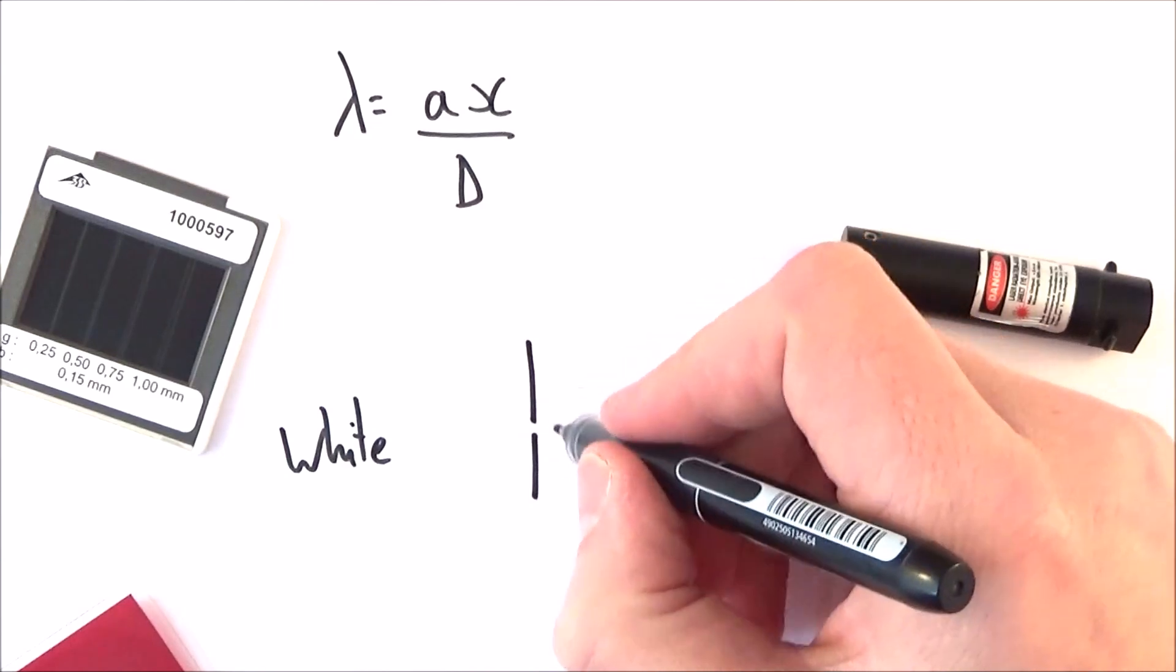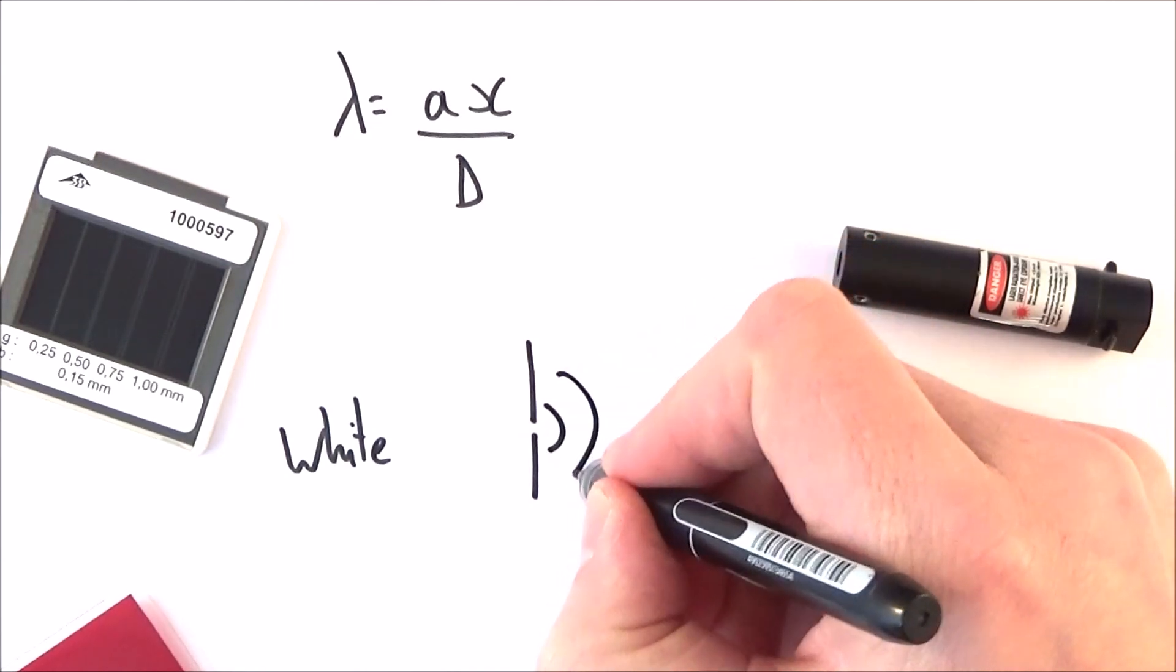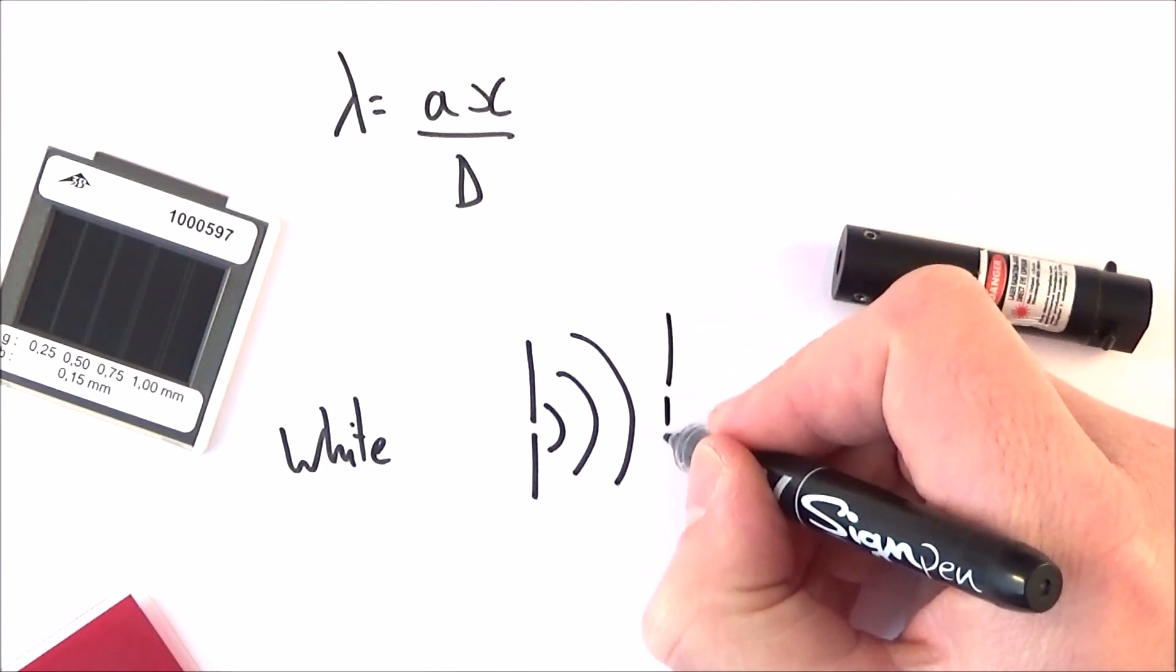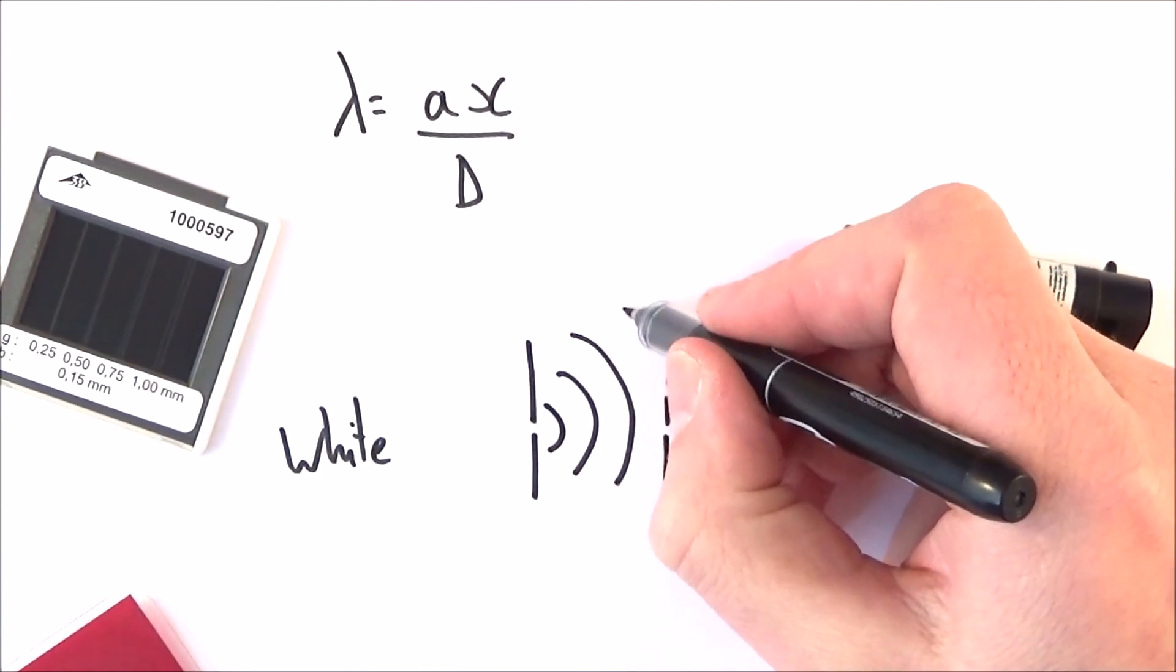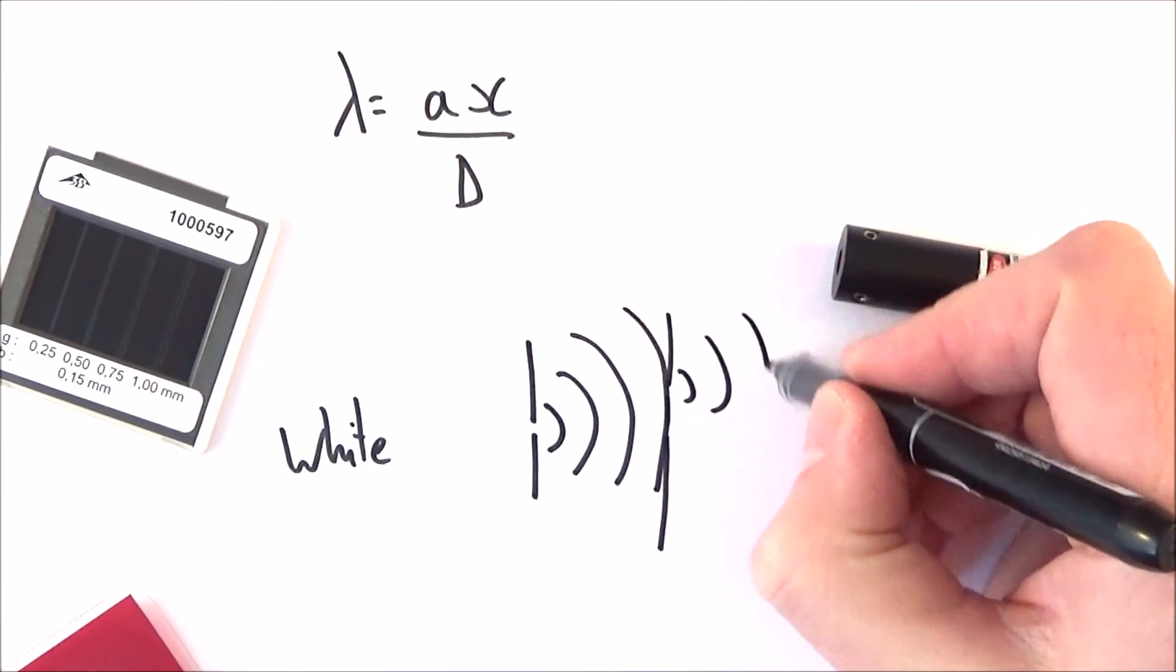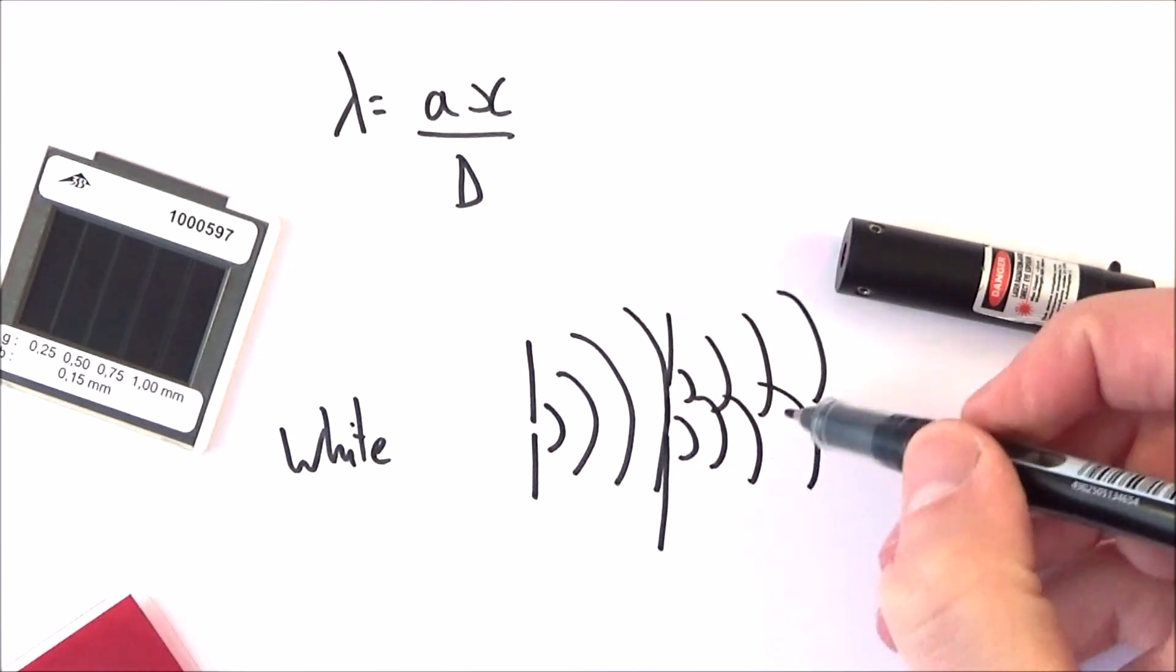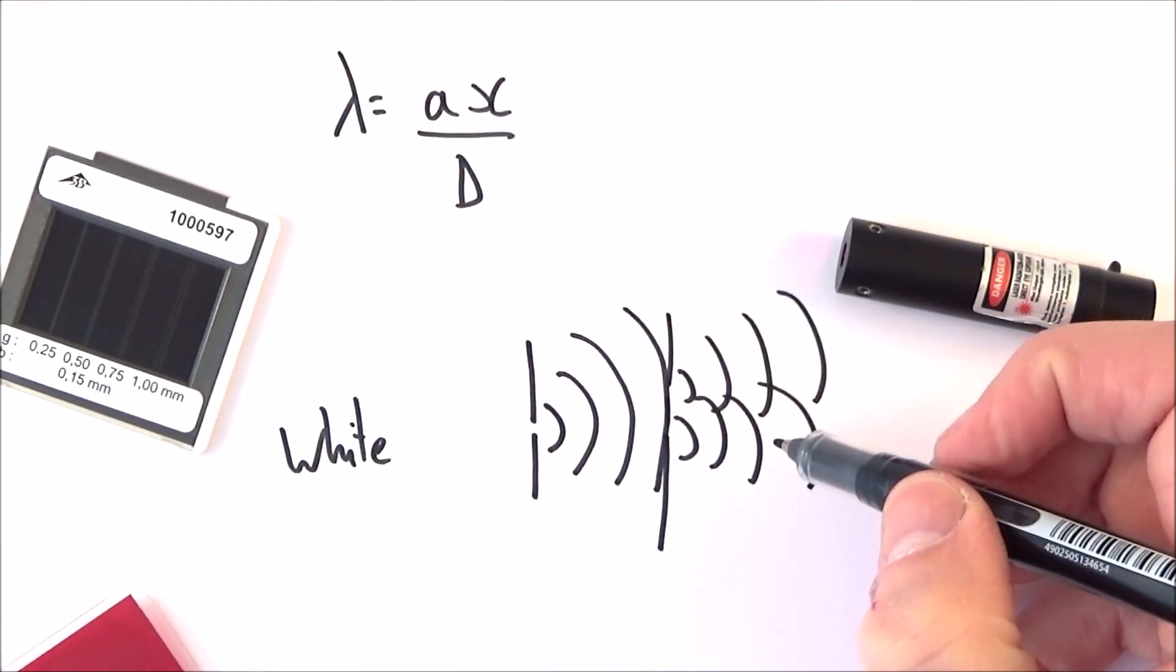But if you send it through one filter or one slit first of all, that wave then diffracts. We send that diffracted light through another slit, and then you get the two sets of light diffracting at that double slit, and then you have the coherent wave source which is interfering with itself.